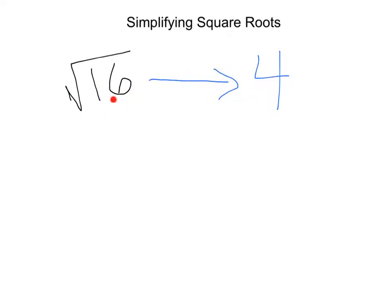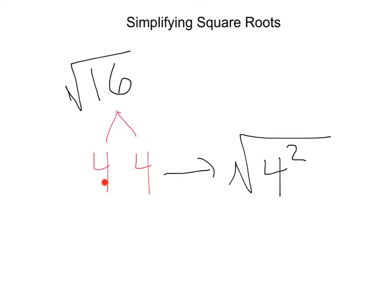Let's go ahead and dissect what's actually going on here in this transition so we can simplify some square roots that are a little more complex. Let's start with the square root of 16 and break it into factors. We know 16 is equivalent to 4 times 4, and you might have heard this called a factor tree before, just breaking this number into factors. Now when we have this 4 times 4, that would give us the square root of 4 squared. 4 times 4 is 4 squared.